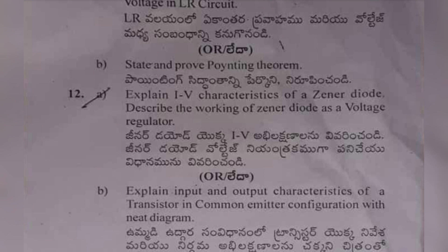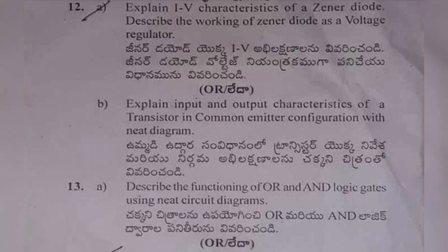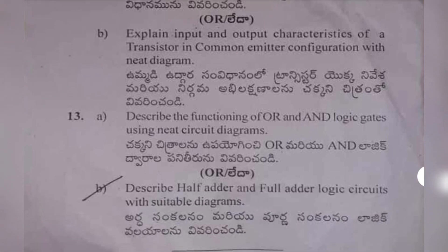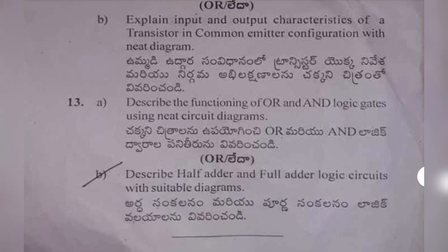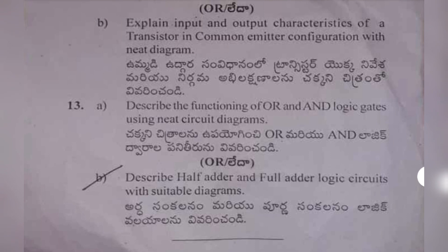Twelfth (b): explain input and output characteristics of a transistor in common emitter configuration with a neat diagram. Thirteenth (b): describe the functioning of OR and AND logic gates using a neat circuit diagram, and describe half adder and full adder logic circuits with suitable diagrams.